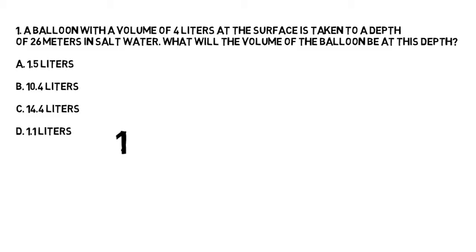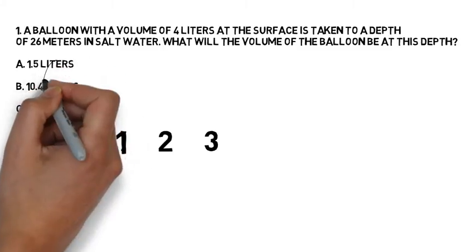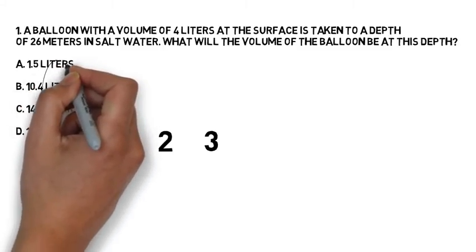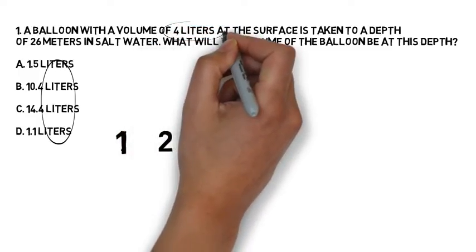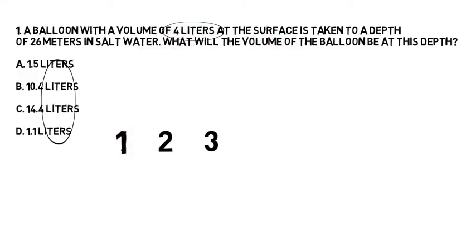So what do we do in step one? We look at the answers. What unit of measurement are the answers in? In this case it's in liters, spelt the American way. It is four liters given to us in the question, so the number four is what we put in step one.